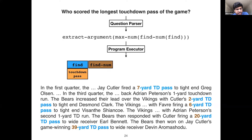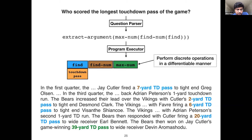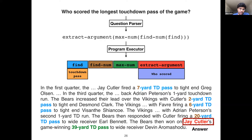Next, the find-number module executes and performs information extraction to get the numbers associated with the spans highlighted in the previous step. Then the max-number module does the discrete reasoning step of finding the maximum number among those inputs — say 39 — in a differentiable manner to propagate gradients efficiently. Finally, the extract-argument module extracts the 'who scored' argument associated with that event, giving an answer like 'Jay Cutler'.